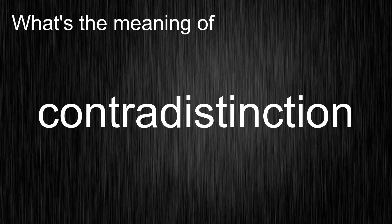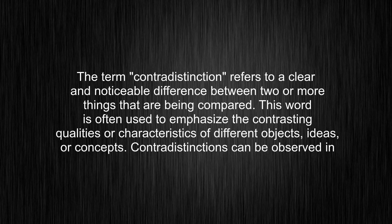What's the meaning of contradistinction? The term contradistinction refers to a clear and noticeable difference between two or more things that are being compared. This word is often used to emphasize the contrasting qualities or characteristics of different objects, ideas, or concepts.